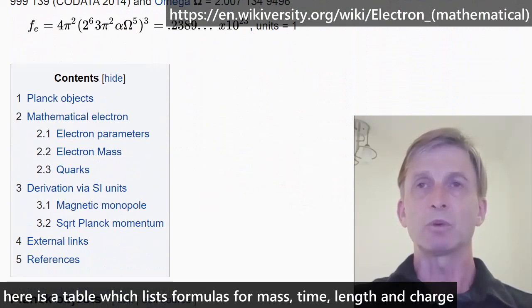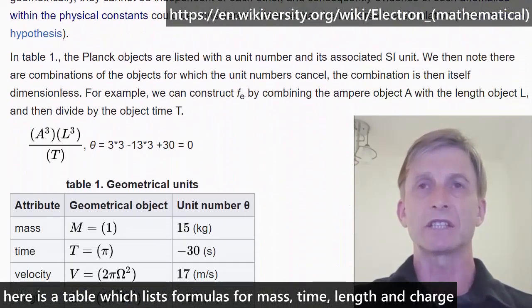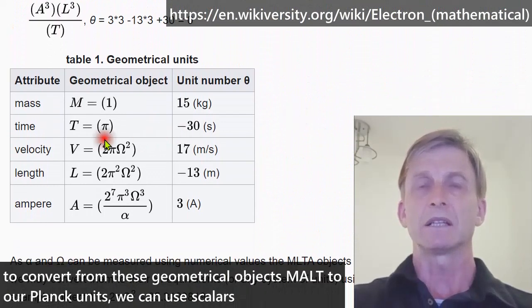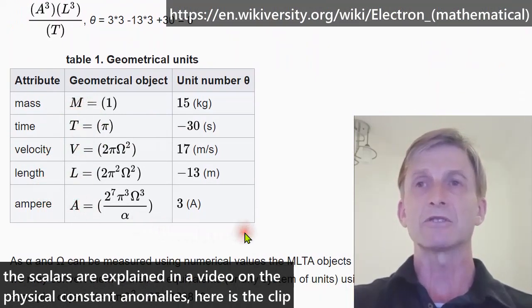Here is a table which lists formulas for mass, time, length and charge. These are analogous to our Planck units. To convert from these geometrical objects to our Planck units, we can use scalars. The scalars are explained in a video on the physical constant anomalies. Here is the clip.